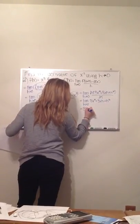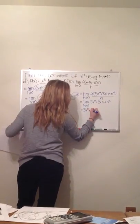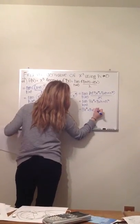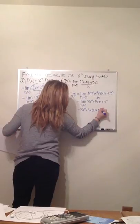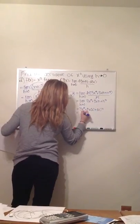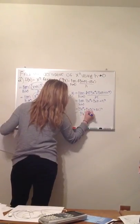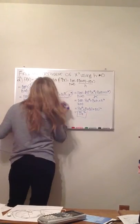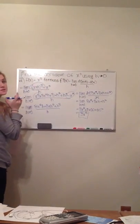Now we plug in the 0, so it's 3x squared plus 3x times 0 plus 0 squared, which would leave us 3x squared, which is the derivative of x cubed. And that's it.